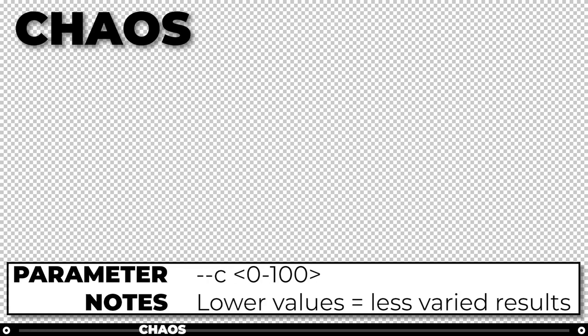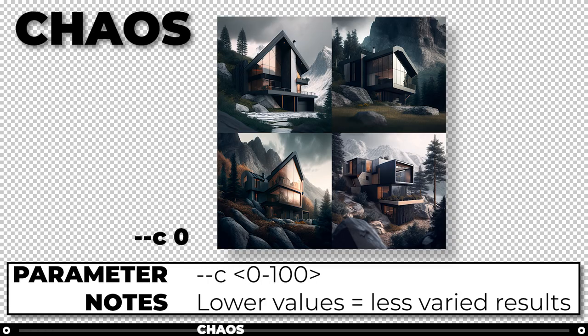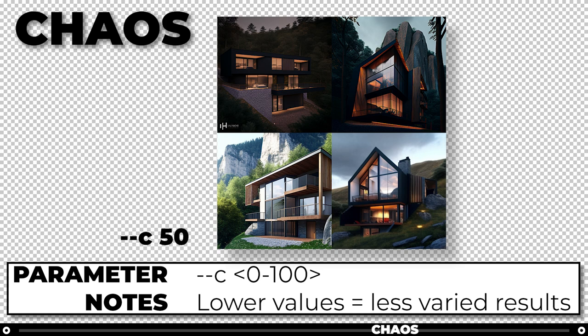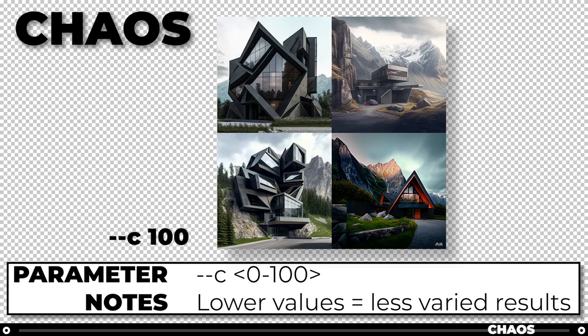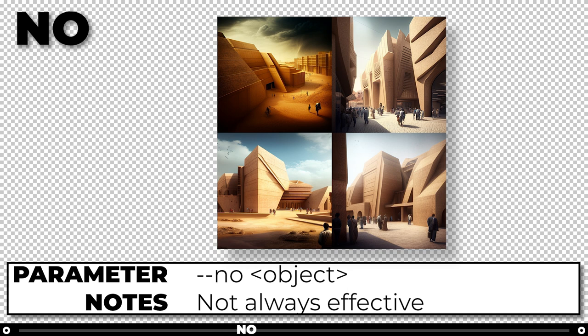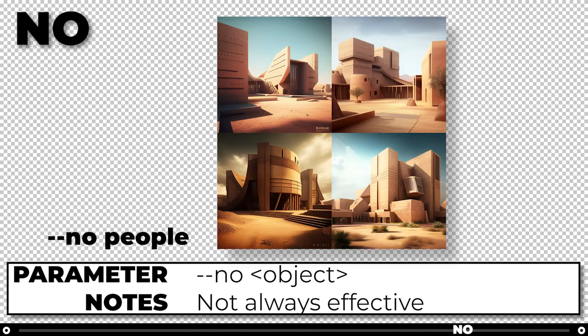The chaos parameter will change how varied and unpredictable your results will be. You can choose any number between 0 and 100, and the default is 0. The no parameter will attempt to omit or remove something specific from your image.